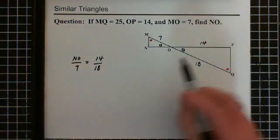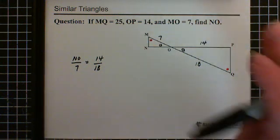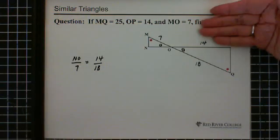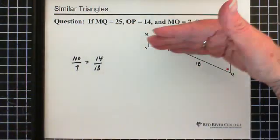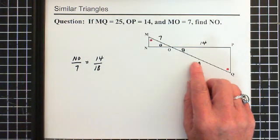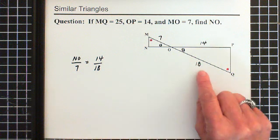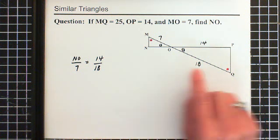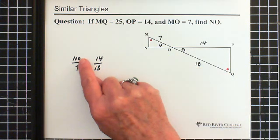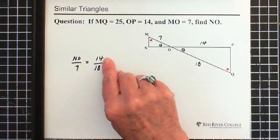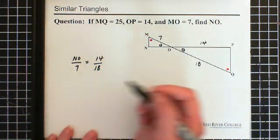And the reason I've set it up that way, NO is my, you can think of it as the base. And if you flip this triangle over, this is also the base. That's our long side. For the base of this triangle, you can think of it that way. And the 7 corresponds to the 18. So there's that relationship. So the NO corresponds to the 14. The 7 corresponds to the 18. So now we're going to solve for NO.